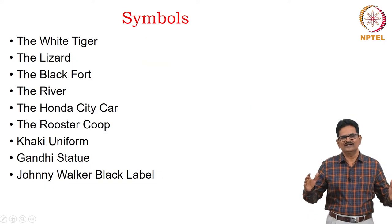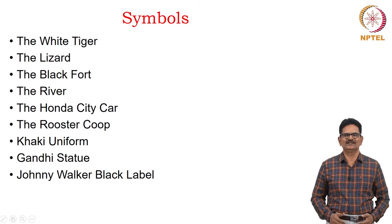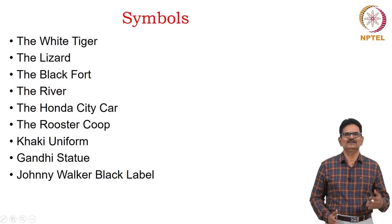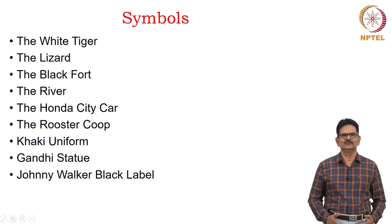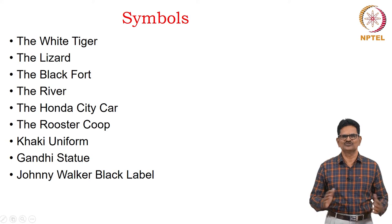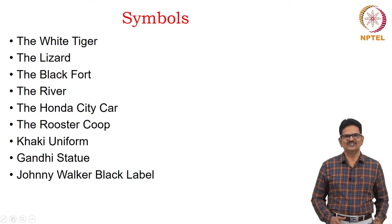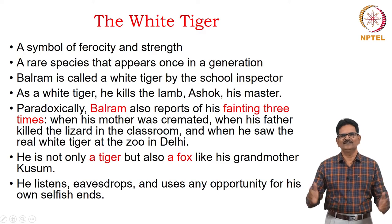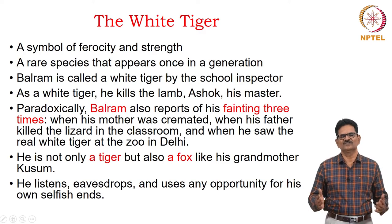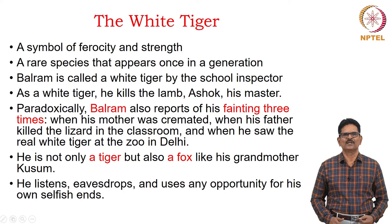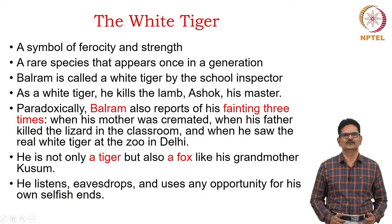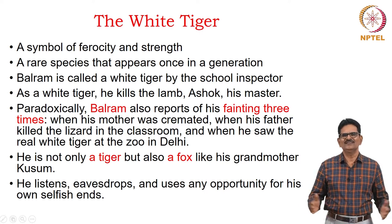We have quite a lot of symbols in the novel. We begin from the White Tiger and go on to the Lizard, the Black Fort, the River, the Honda City Car, the Rooster Coop, the Cocky Uniform, Gandhi Statue, Johnny Walker, and Black Label. The White Tiger is a symbol of ferocity and strength — it is a rare species that appears once in a generation.